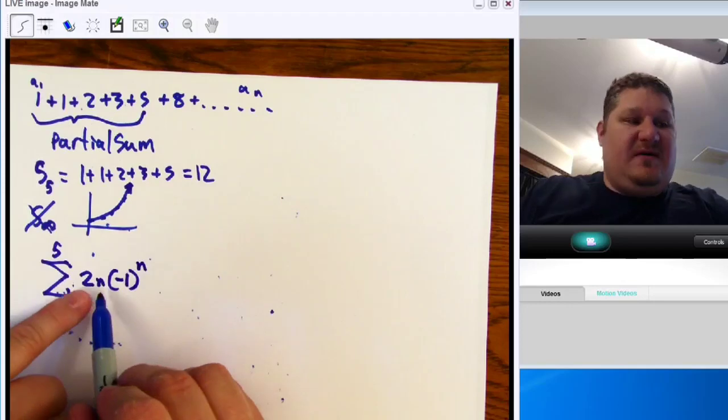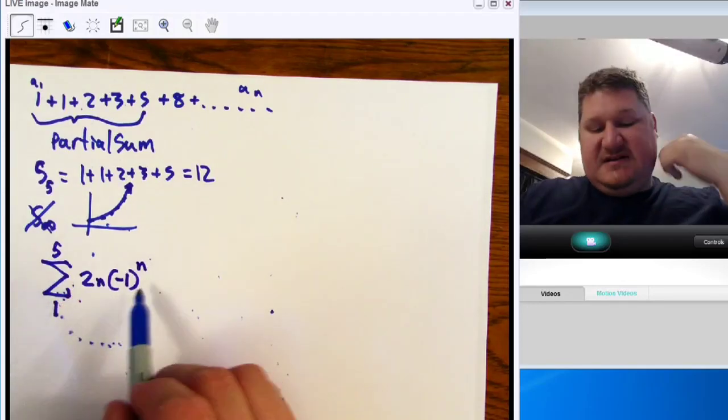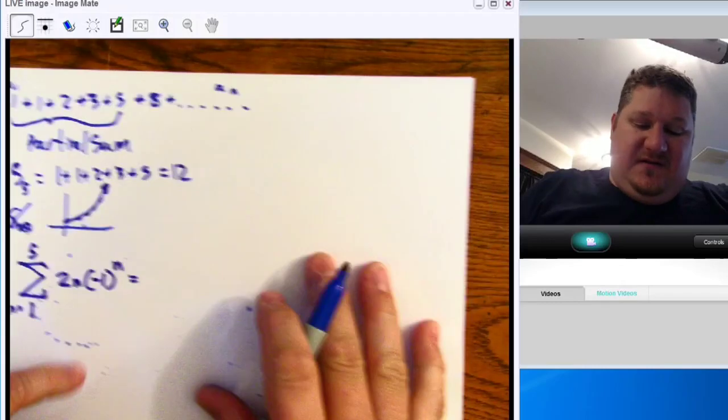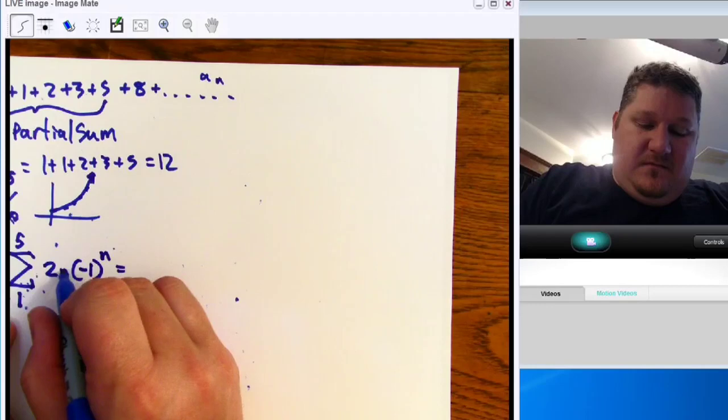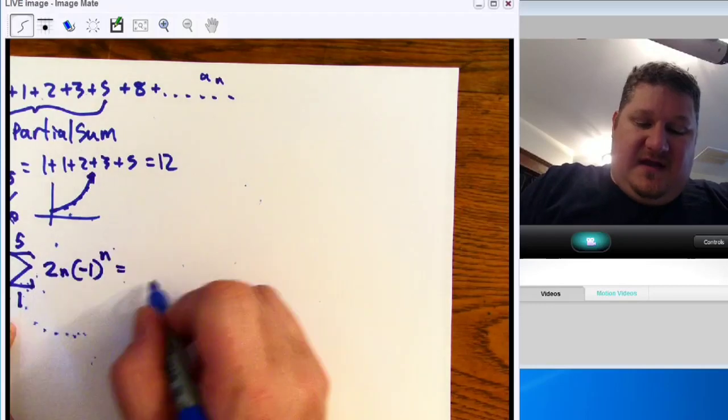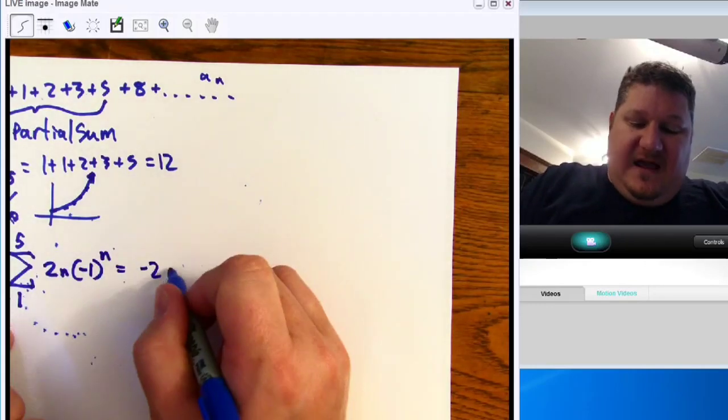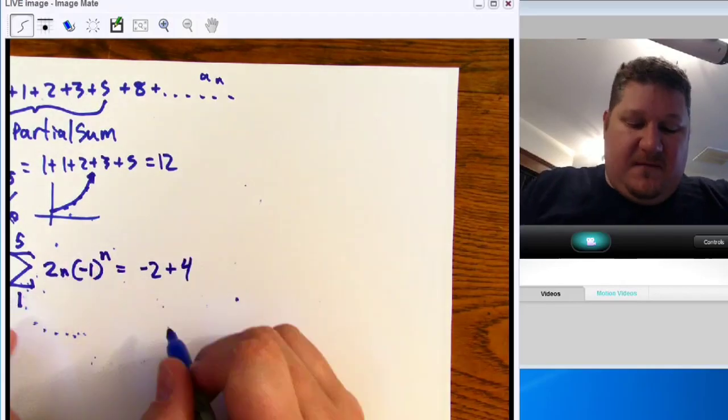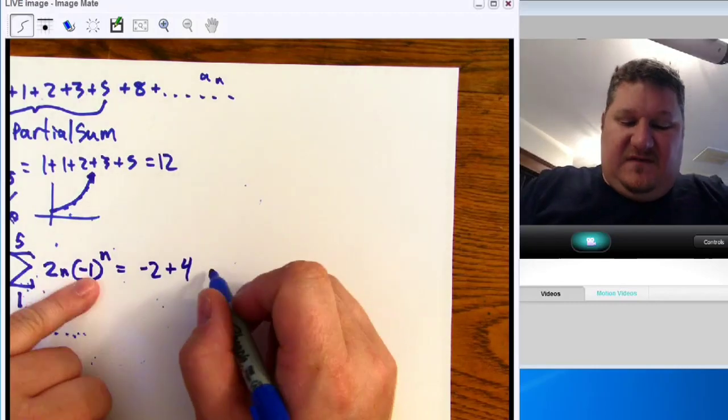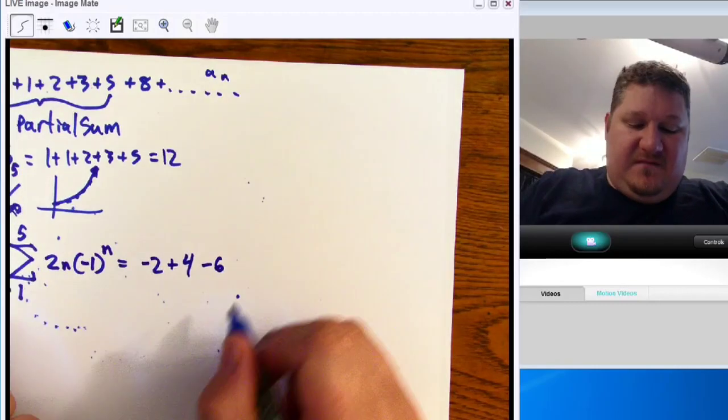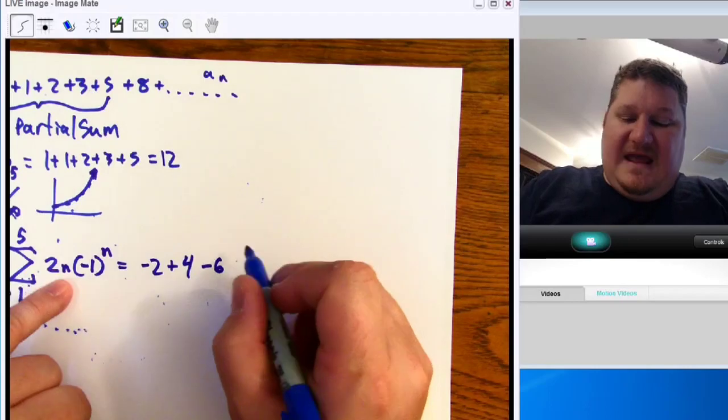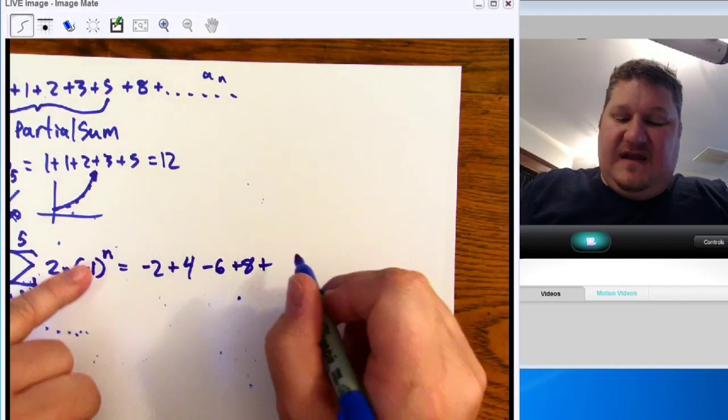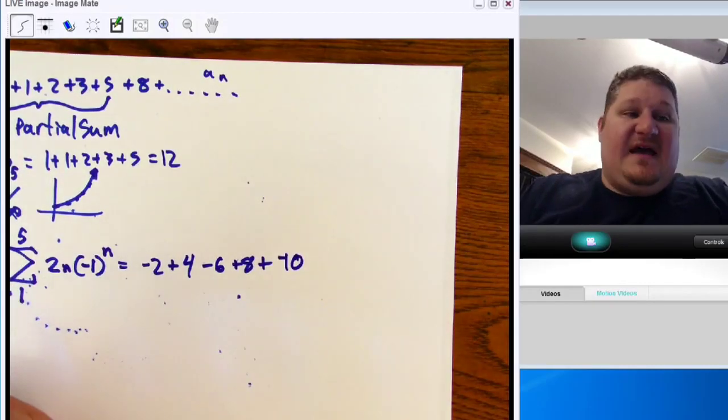So, you'll notice there is no a sub n minus 1 in here because this is explicit. It's all based off the n's. So, n goes from 1 to 5. Let's figure it out here. We have 2 and then we have negative 1. So, it's negative 2. Then the next one is going to be 2. So, I get 4. But since that's squared, it's even. So, plus 4. Then I get 3. That's going to be 6. But that's going to be odd. So, it's going to be negative 6. I'm going to do 4. That's going to be 8. But it's going to be positive. So, plus 8. Plus. Then we get 5. We get 10. But it's negative, negative 10. And I have to add all these together.